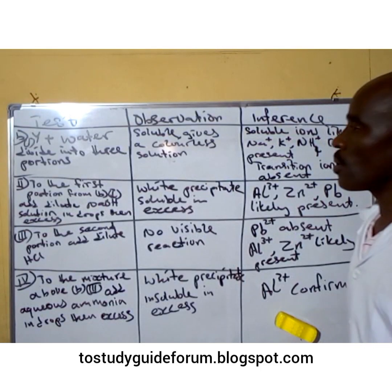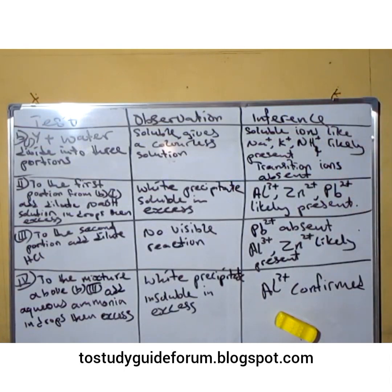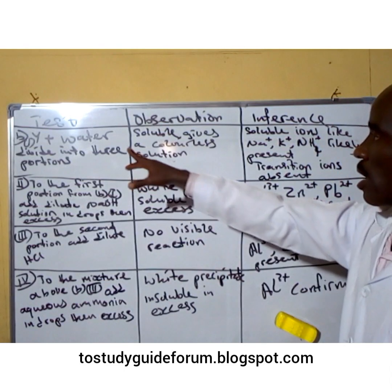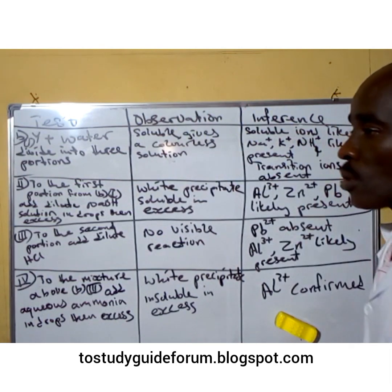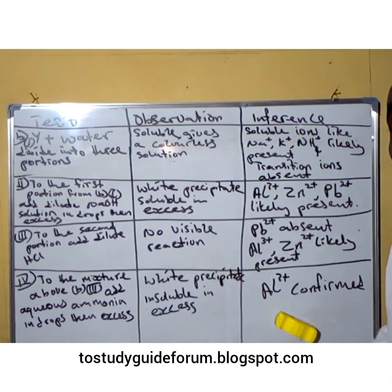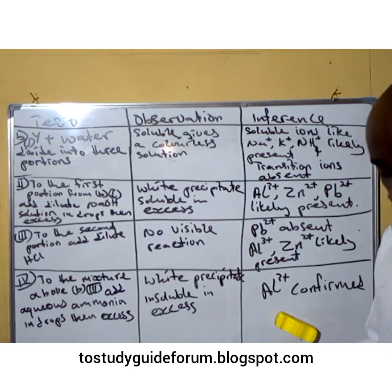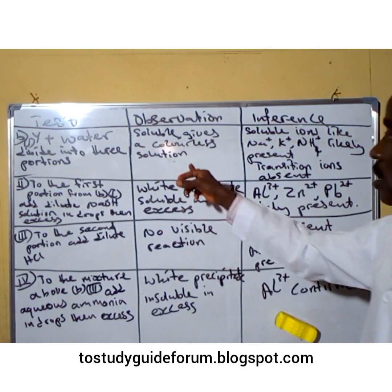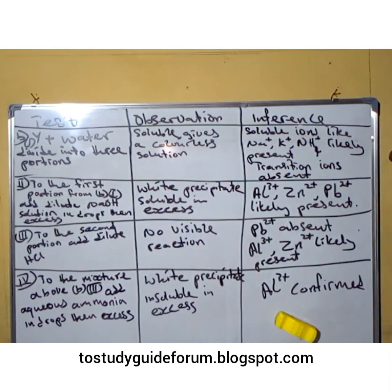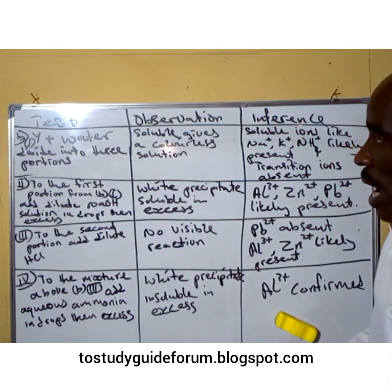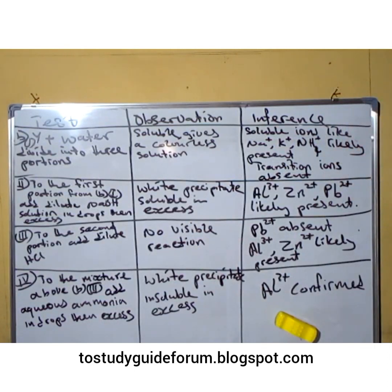Welcome back to another exciting video. In our previous video we analyzed the first compound X regarding the forthcoming NELCO qualitative analysis chemistry exam. Now we are looking at part B, which is compound or source Y. Source Y is known to be aluminium chloride. The first thing we do, like we did in the other one, is to test the solubility.